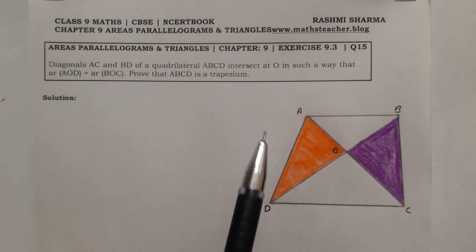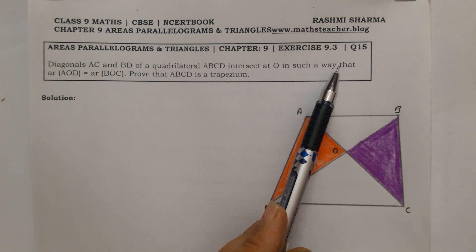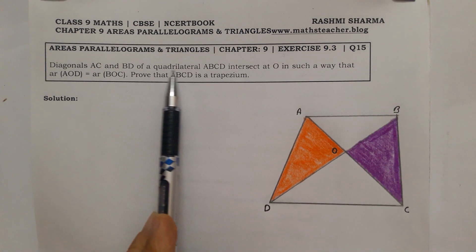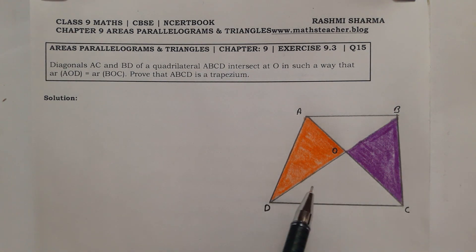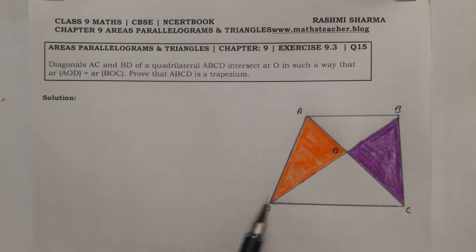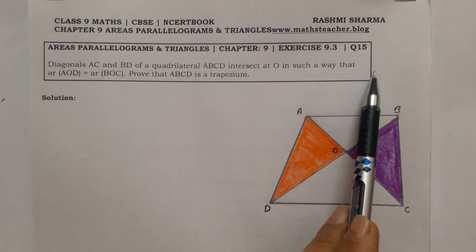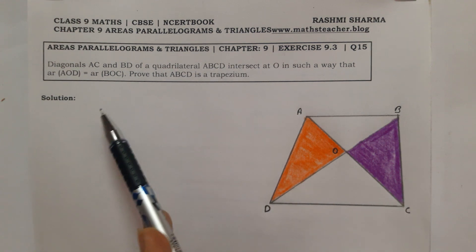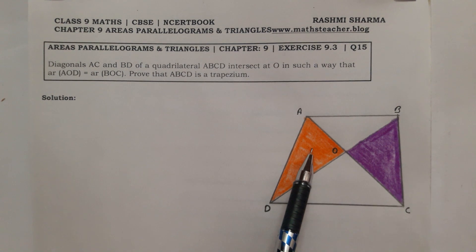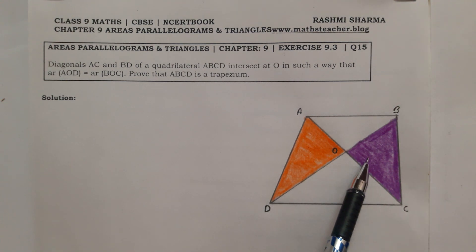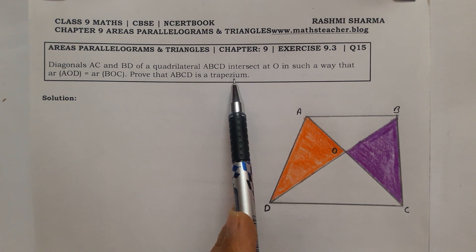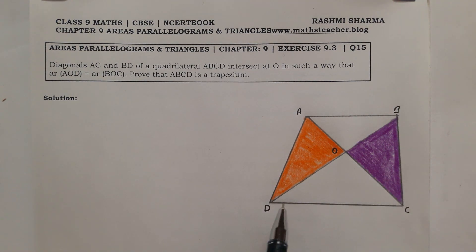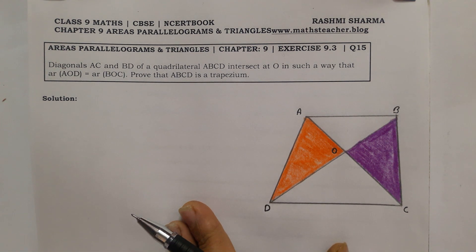In this video we will solve Exercise 9.3, Question Number 15. Diagonals AC and BD of quadrilateral ABCD intersect at O, in such a way that area of triangle AOD equals area of triangle BOC. We have to prove that ABCD is a trapezium.